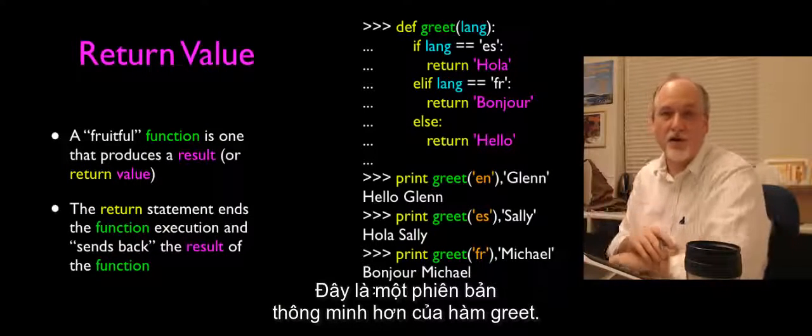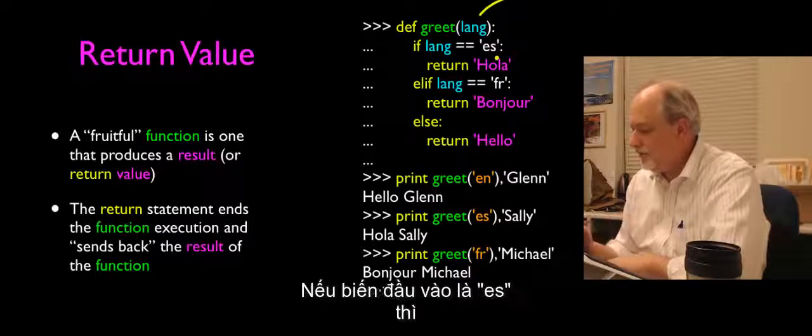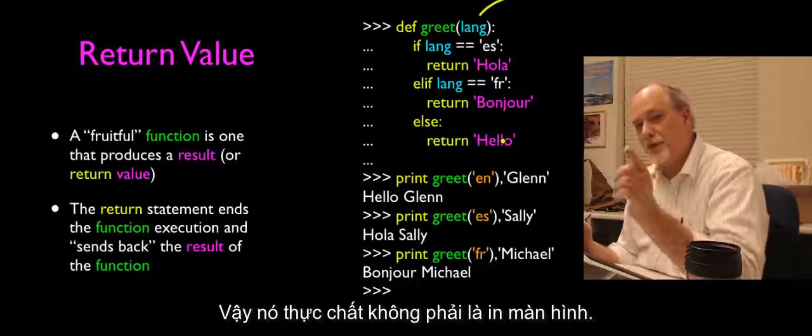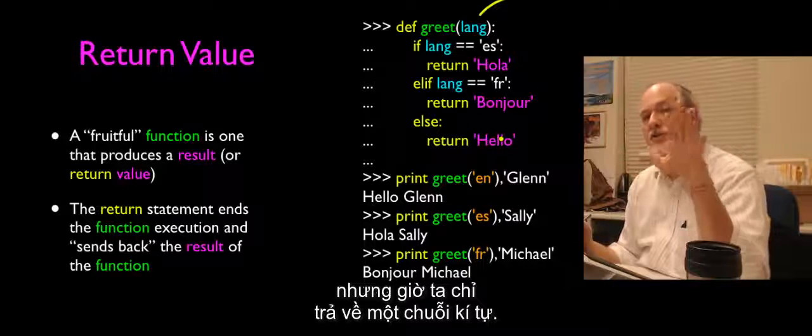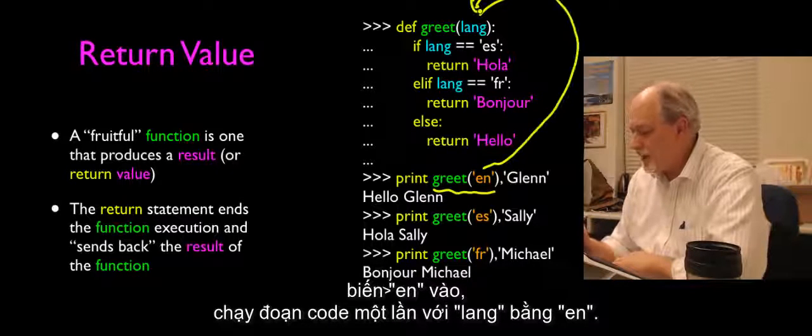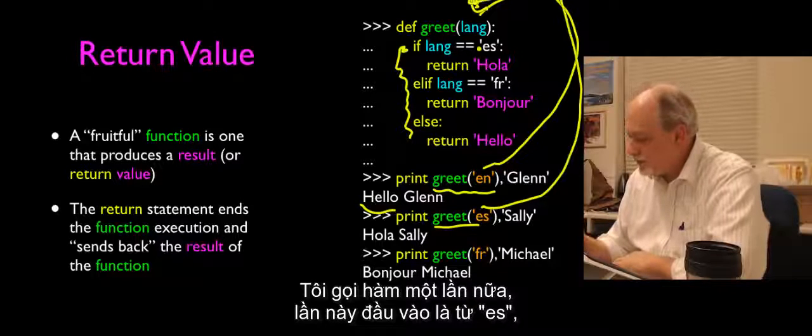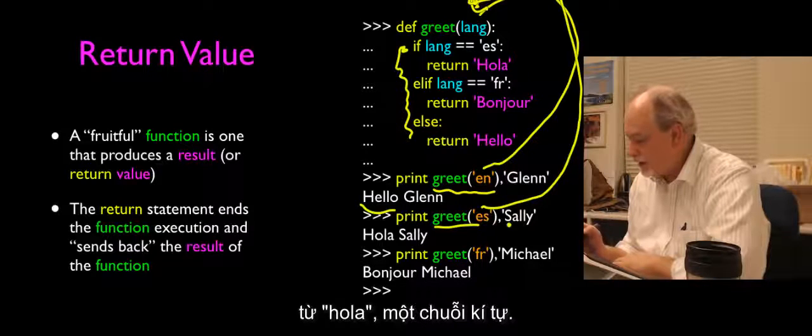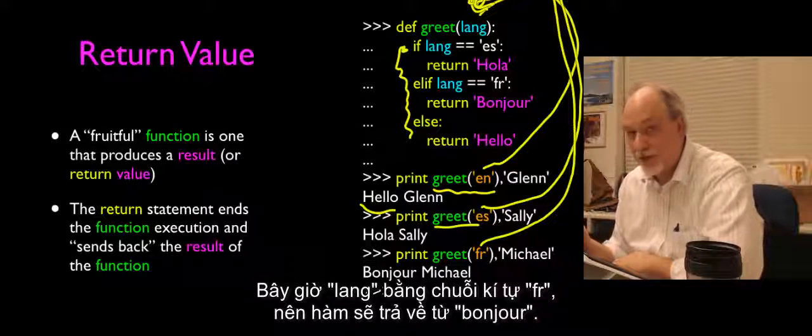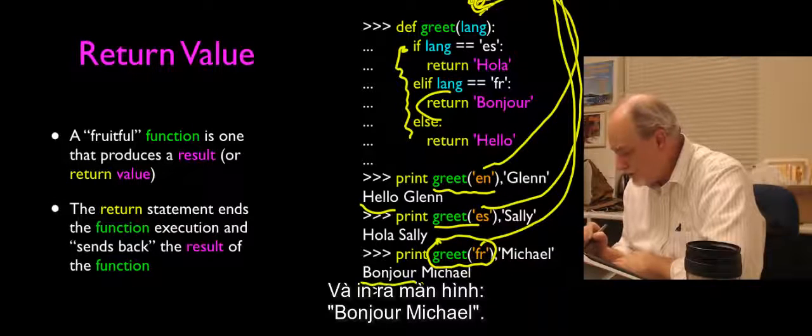So, return is a statement that both terminates the execution of the function and defines the value of what will be replaced when the function call comes back in the line that the function was called from. So, here is a little smarter version of our greet function. It's very similar. It's called greet still. It takes lang as a parameter. And if the language is es, then it returns the string hola. If the language is French, it returns bonjour. Otherwise, it returns hello. So, we're not actually doing the print. If you go back on the other slides, we are printing. But now, we're just returning a string. Okay. And so, now, I can call print greet and pass en in. So, then that runs the code once with lang equal to en. And I get back hello and then comma Glenn. Then I call it again and I pass es in. And then that time, it returns the return value here becomes hola, a string hola, hola Sally. And then Michael, I pass in one more time. Lang now is fr, the string fr. And so, it returns bonjour. And so, the residual that is here is bonjour. And so, out comes bonjour Michael.